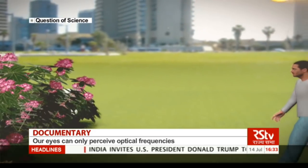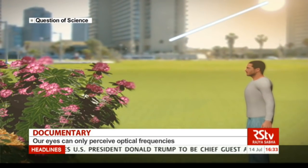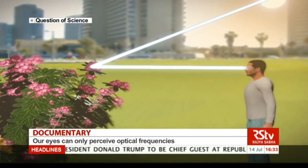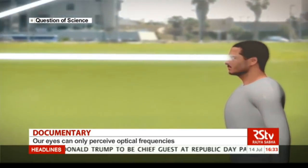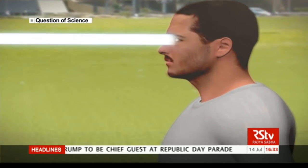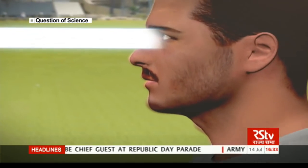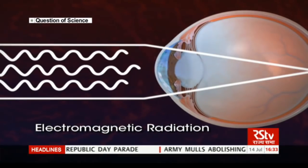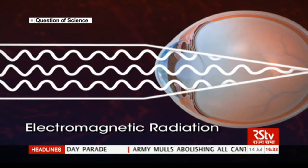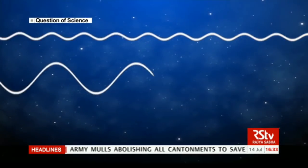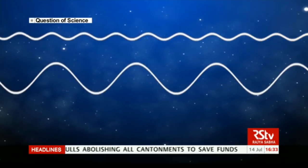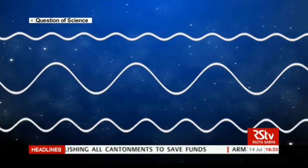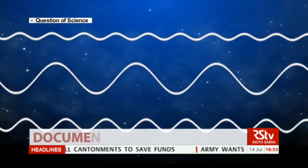When we look at something, we receive light signals reflected from the object. The light is a phenomenon called electromagnetic radiation. Simply put, this radiation consists of waves, which are described by frequency, or the rate at which these waves go past you.